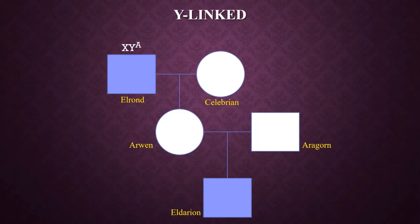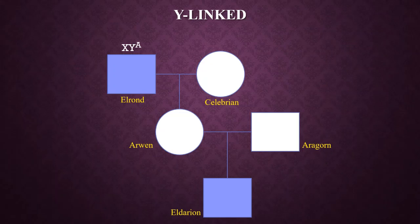Finally, we have the Y-linked mode of inheritance. Any individual that has a dominant allele on the Y chromosome will have the trait. Elrond has the trait because he is Y-linked dominant. However, he cannot pass it on to his daughter because females only have XX chromosomes, while males can only have XY chromosomes. Therefore, we can conclude that this is an inconsistent mode of inheritance.